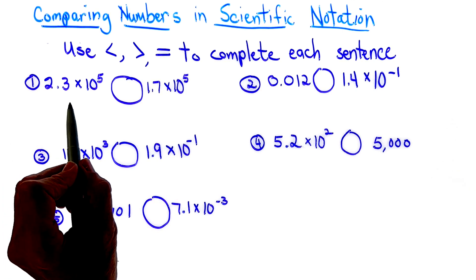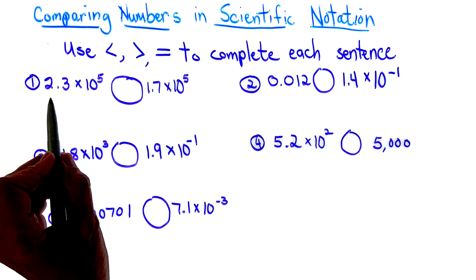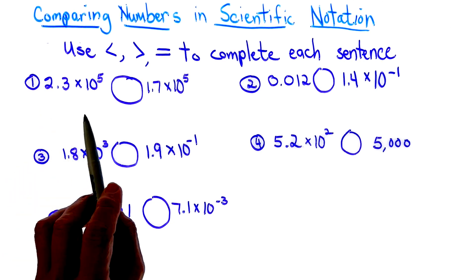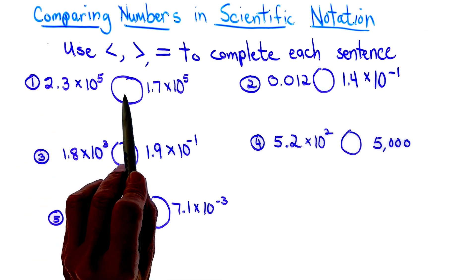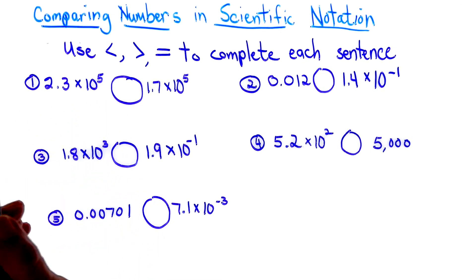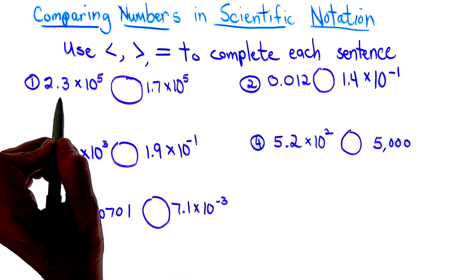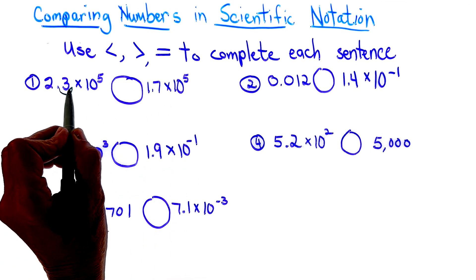So as I'm looking at this, remember, scientific notation, your number has to be between 1 and 10 and times a power. So looking at this, I'm going to rewrite these so I can really see the value of the numbers.